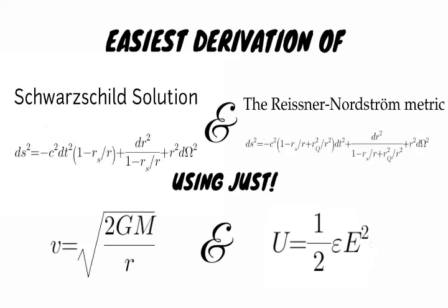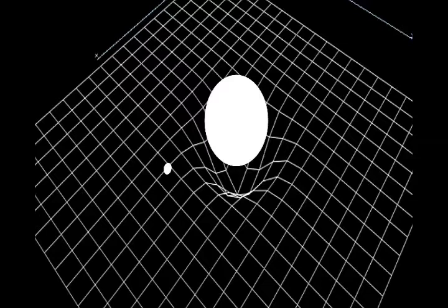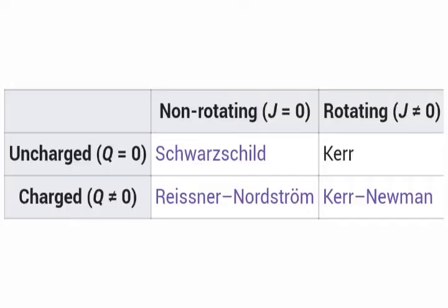We first discuss what is a black hole metric. A black hole metric is a metric that represents how a gravitational source is affecting spacetime. There are four types of black hole metrics, categorized by the angular momentum J and the charge Q. A gravitational source with no Q or J is described by the Schwarzschild metric, and a charged gravitational source is described by the Reissner-Nordström metric. A rotating gravitational source is described by the Kerr metric, and a source which is both charged and rotating is described by the Kerr-Newman metric.